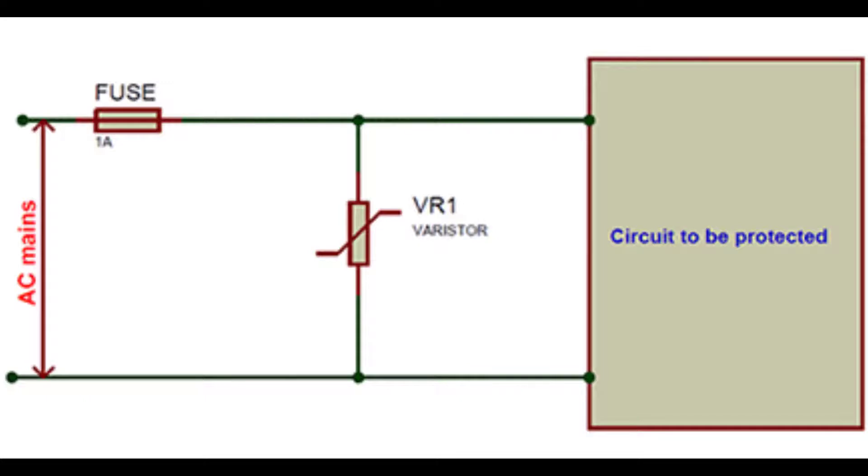Let us assume that we are using MOV of 250V. Then, if the supply voltage is less than 250V, MOV will have high resistance and there will be no current flowing through the MOV. At that time, all the current will be flowing through the device.